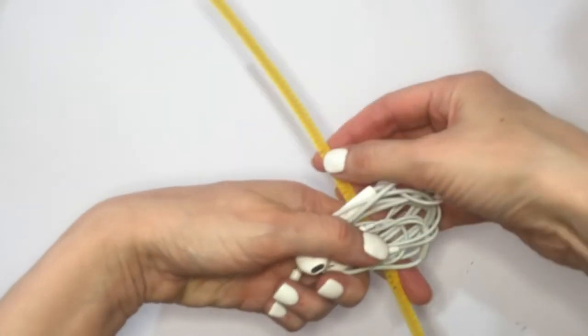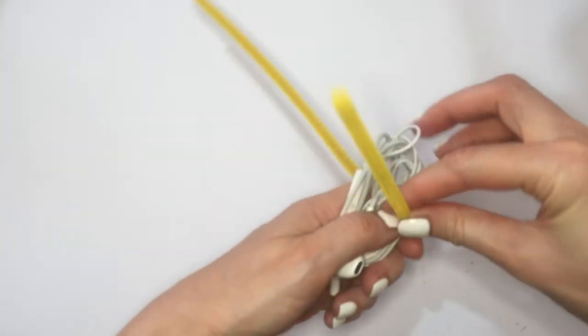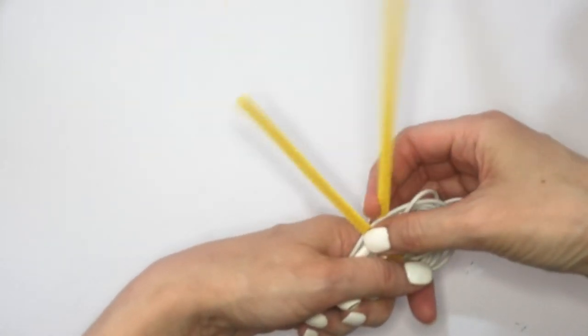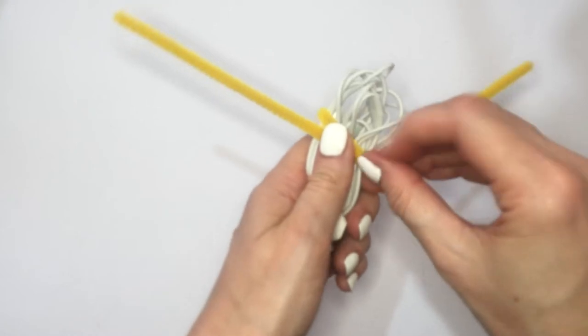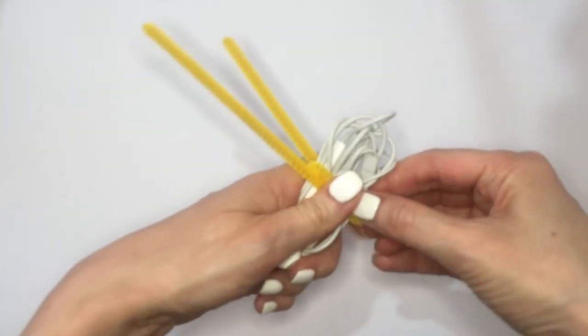I just wrap the cable of my earphones around my hand, and then I use one pipe cleaner to go around and wrap this part. What's cool about these pipe cleaners is that they're fluffy on the outside but have a wire on the inside.